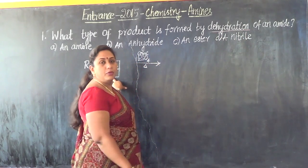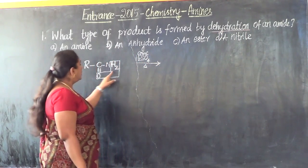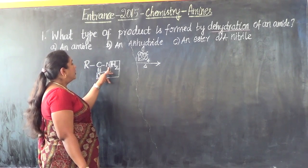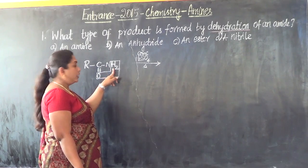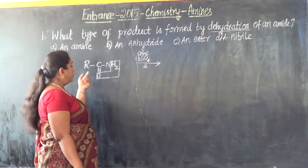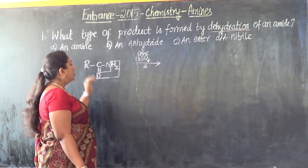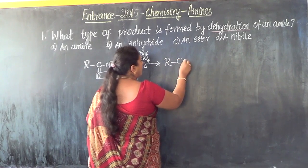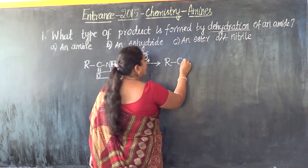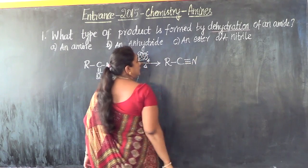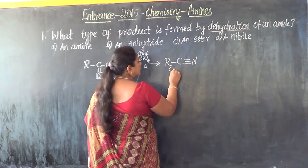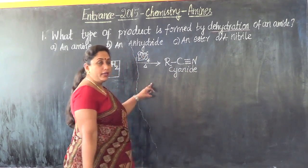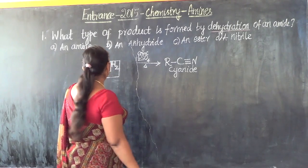Dehydration means removal of a water molecule. After elimination, nitrogen has lost 2 hydrogens and carbon has lost the oxygen it was double-bonded to. To balance, the product formed is R-C≡N — a cyanide. Organic cyanides are otherwise called nitriles.